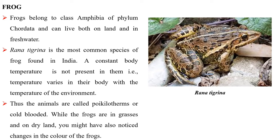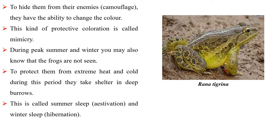While the frogs are in grasses and on dry land, you might have also noticed changes in the color of frogs. They have the ability to change color to hide from their enemies. This kind of protective coloration is called mimicry.